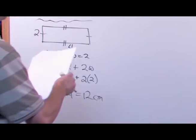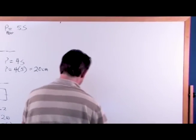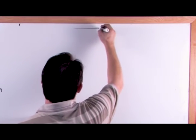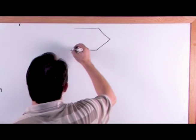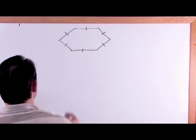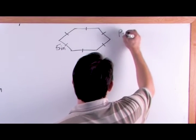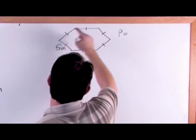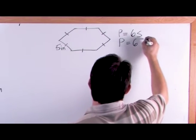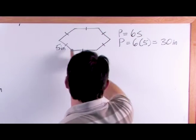The perimeter equals 8 plus 4, which is simply 12 — could be centimeters, inches, miles, or whatever. Next, let's do one with a hexagon. Here's a hexagon where all sides are the same, and one side is 5 inches. The perimeter is 5 plus 5 plus 5 plus 5 plus 5 plus 5 — since you have six sides, it's just 6 times 5, which is 30 inches.